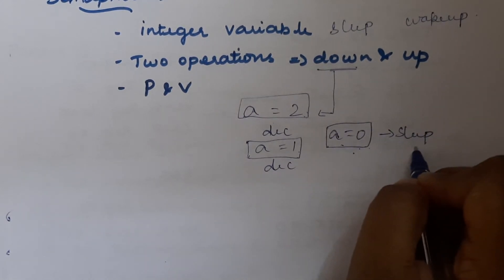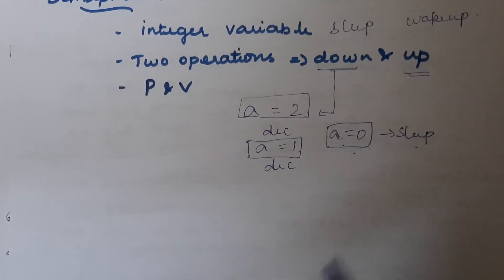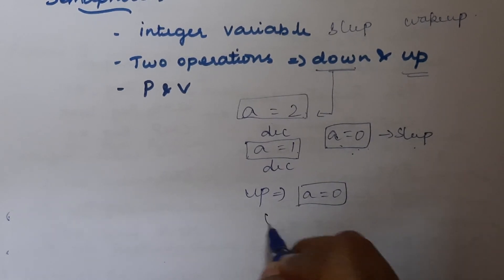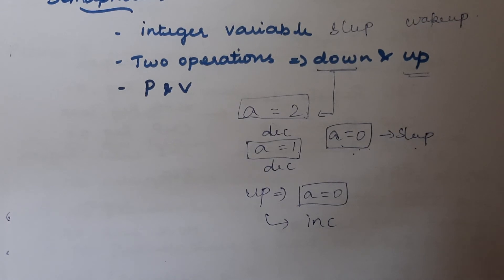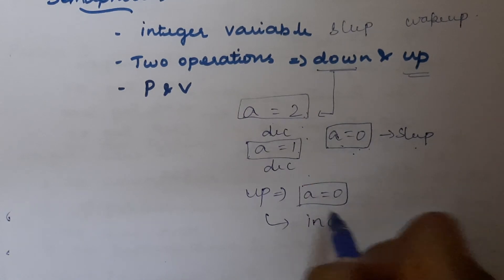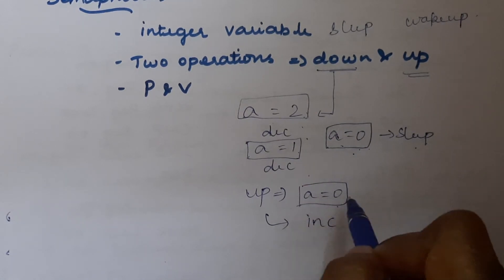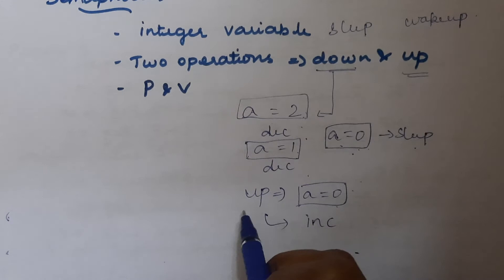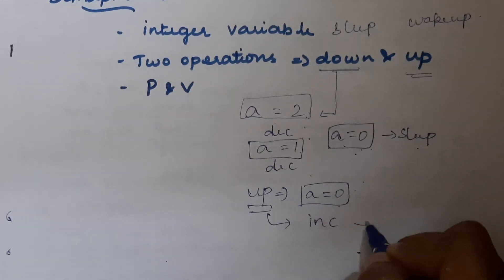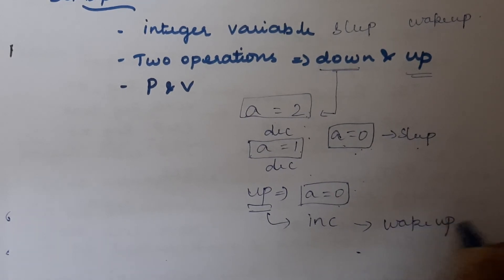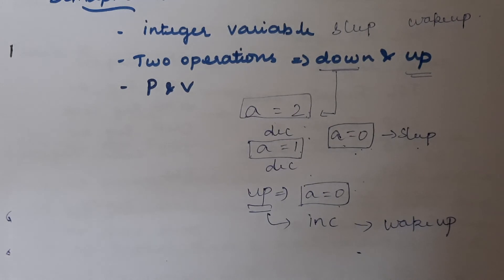The up operation checks the value of 'a'. When 'a' equals zero, it performs the increment operation. So: down performs decrement, up performs increment. When 'a' equals zero, the particular process is in sleep mode, and we wake it up with the up operation by incrementing the variable. This wakes up whichever process is using that semaphore variable.